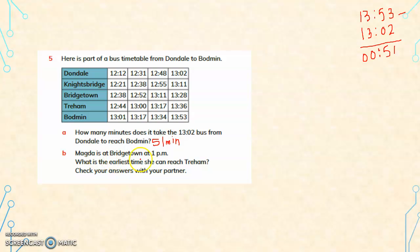Magda is at Bridgetown at 1 p.m. What is the earliest time she can reach Treham? Check your answer with your partner. The different bus timings at Bridgetown station are 12:38, 12:52, 13:11, and 13:28.